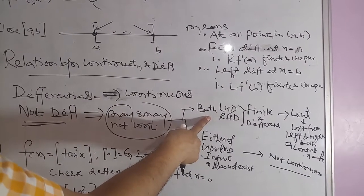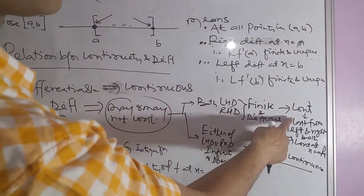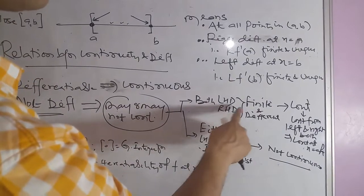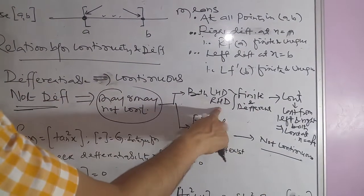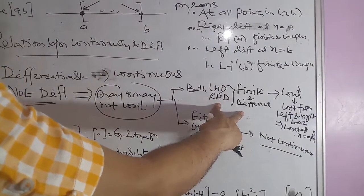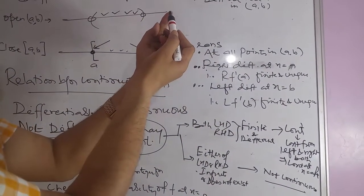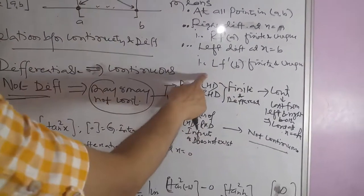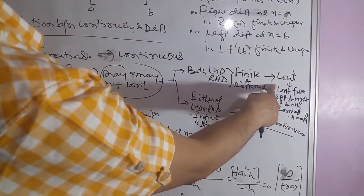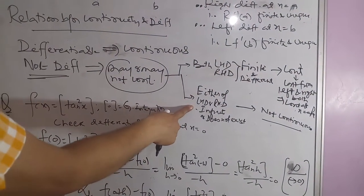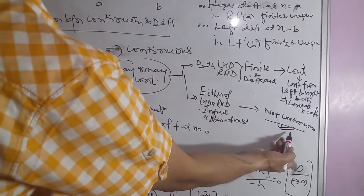In the first case, when differentiability fails because LHD and RHD are finite but different, the function must be continuous. A finite left-hand derivative means continuous from the right, and a finite right-hand derivative means continuous from the left, so the function is continuous at that point. In the second case, if either derivative does not exist or is undefined, the function is necessarily discontinuous.